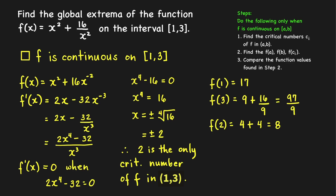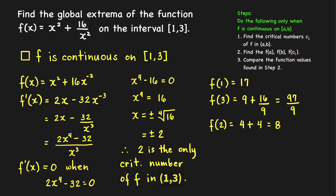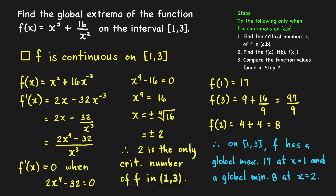Step 2: find the function values at the endpoints and at the critical number. f(1) = 1 + 16 = 17. f(3) = 9 + 16/9 = (81 + 16)/9 = 97/9. f(2) = 4 + 4 = 8. Comparing these values, the function f has a global maximum of 17 at x = 1 and a global minimum of 8 at x = 2.